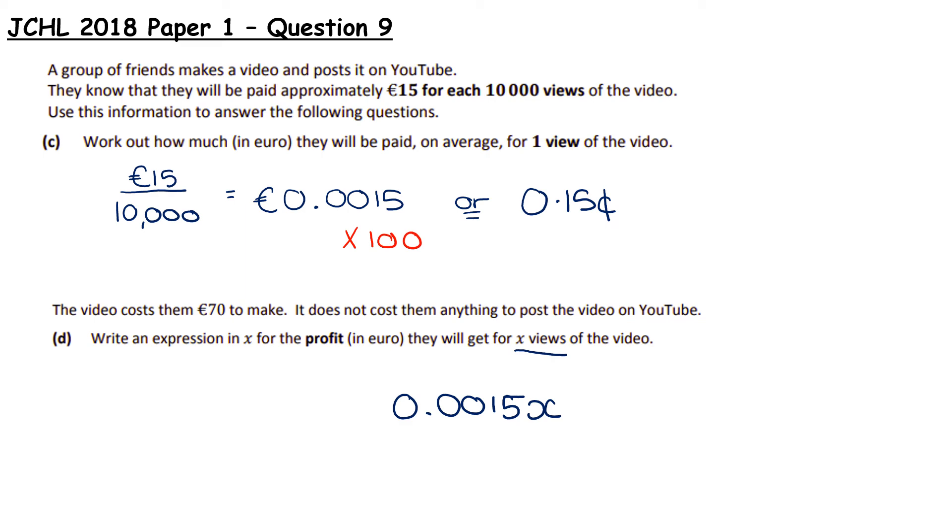Now that's how much money they make. This is what they make. The cost is stuck. It's constant. And the cost is 70. So the profit, to figure out how much profit, it'll be how much they make minus the costs. So we have 0.0015X take away 70. Now what will happen is if that number X is lower than a specific number, they will not make a profit. For example, if they only got 10,000 views, we're going to find that they'll actually make a negative profit, which is a loss.